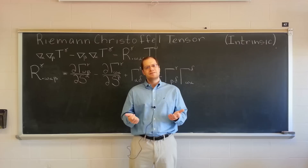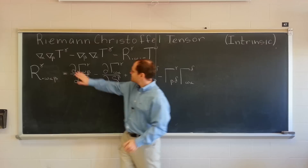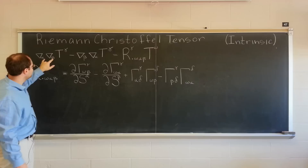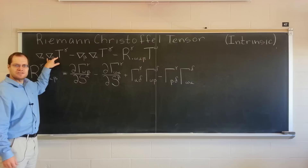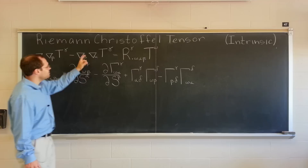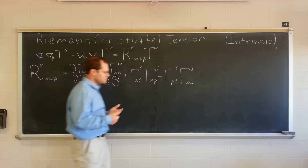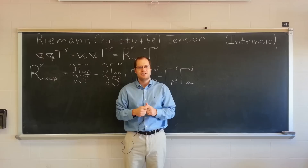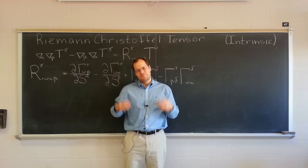How does the Riemann-Christoffel tensor arise? It arises from a very natural question: asking whether the surface covariant derivatives commute when applied to a tensor or a variant of order 1. Calling the two variables S1 and S2, we apply the covariant derivative with respect to S1 and then S2, and then in the opposite order — would the result be the same? In Euclidean space we concluded yes, covariant derivatives commute.